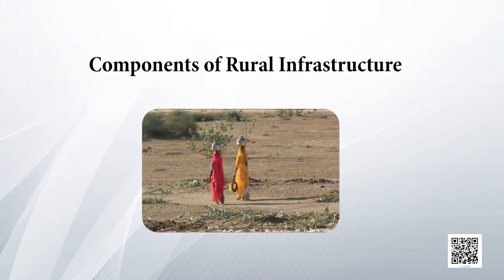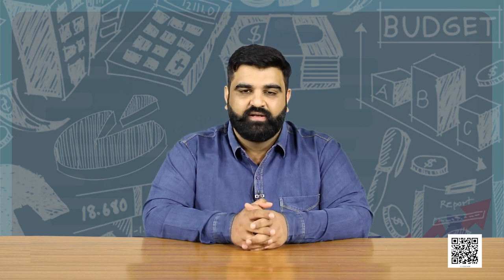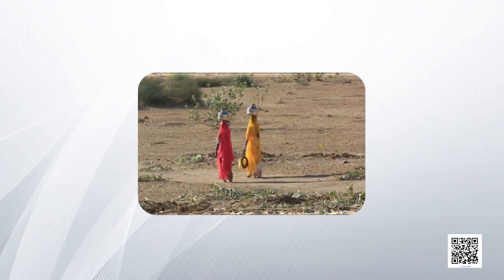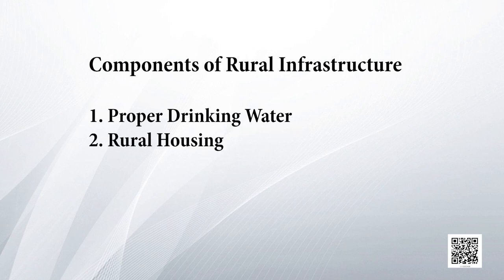Now let's discuss some components of rural infrastructure. In urban areas the situation of infrastructure is already strong, but rural areas lag behind — that is why we need to talk about rural infrastructure. The first component is proper drinking water, which is not properly available in rural areas as people have to walk long distances to fetch potable water. The next component is rural housing — many people in rural areas live in katcha houses and are worst affected during floods, so the government should build pakka houses for them.